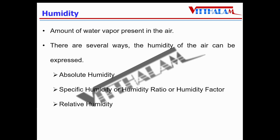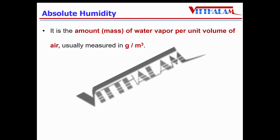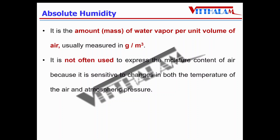Let's understand absolute humidity. It is the amount or mass of water vapor per unit volume of air, usually measured in grams per cubic meter. It is not often used to express the moisture content of air because it is sensitive to changes in both the temperature of the air as well as pressure.